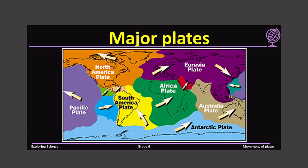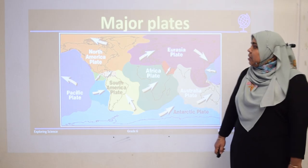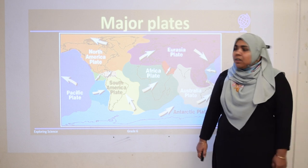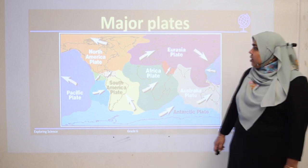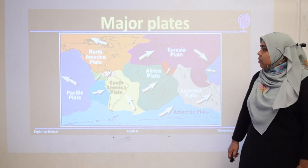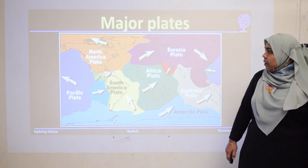During the previous lesson of science, you have learned about the major plates of the Earth. In this map, you can see the seven major plates of the Earth, each plate in a different color. You can identify the seven plates and recall the previous lesson from here.